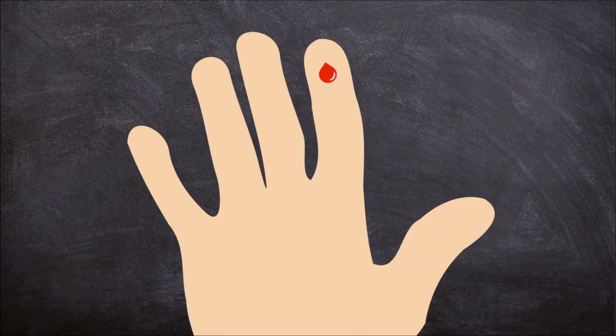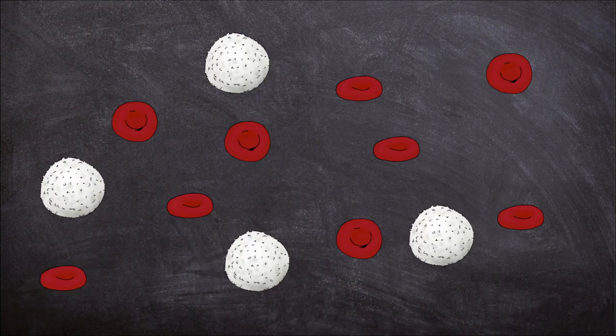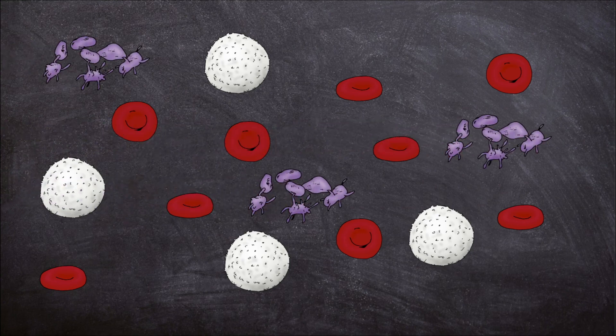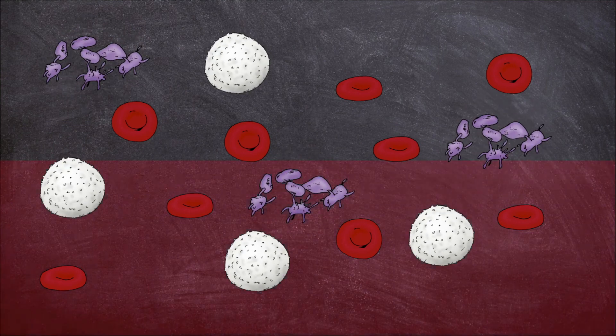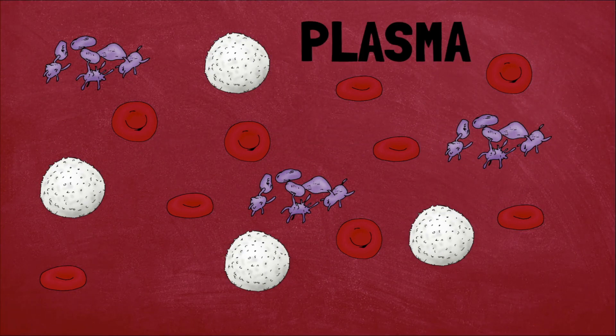When you prick your finger, you don't bleed forever. Eventually, the blood stops flowing. Platelets are what make the blood clot. Red blood cells, white blood cells, and platelets are all floating in a liquid called plasma.